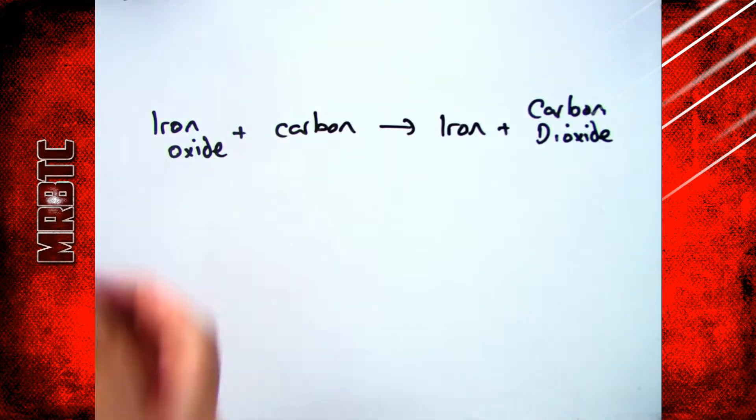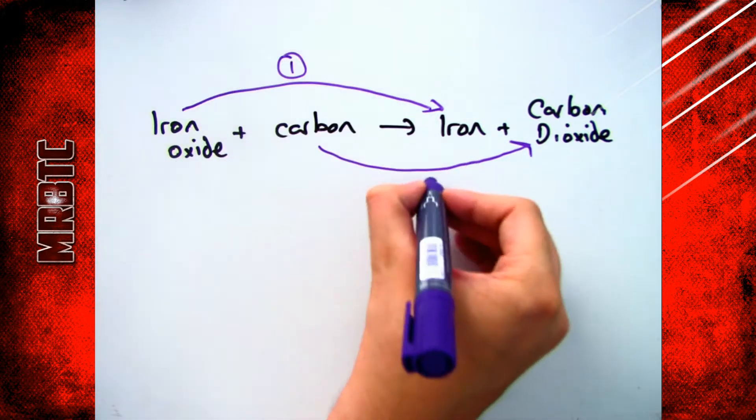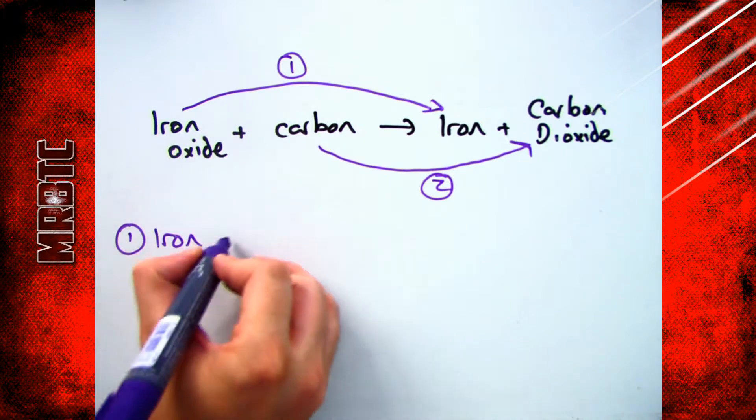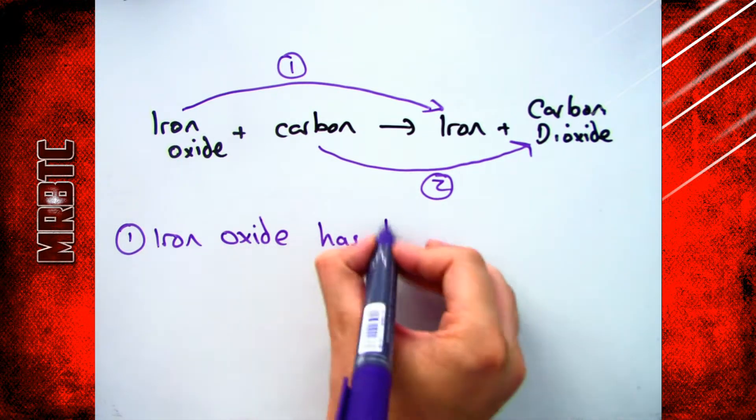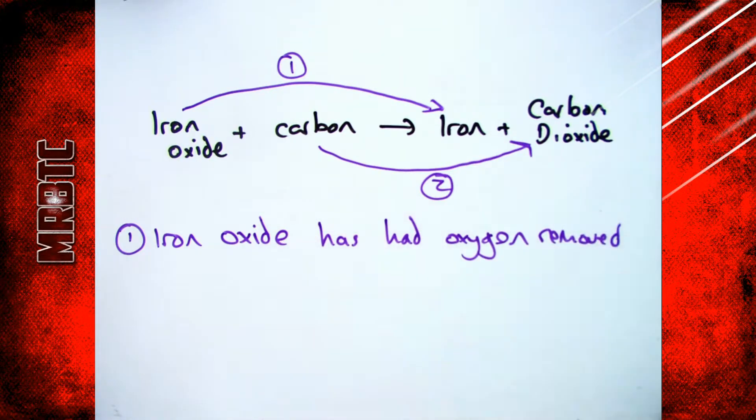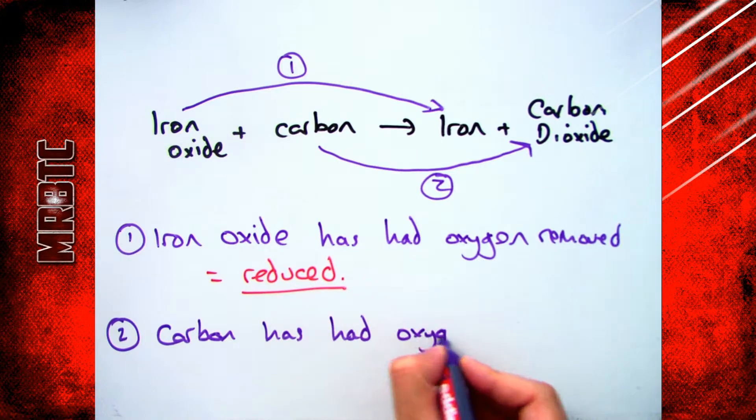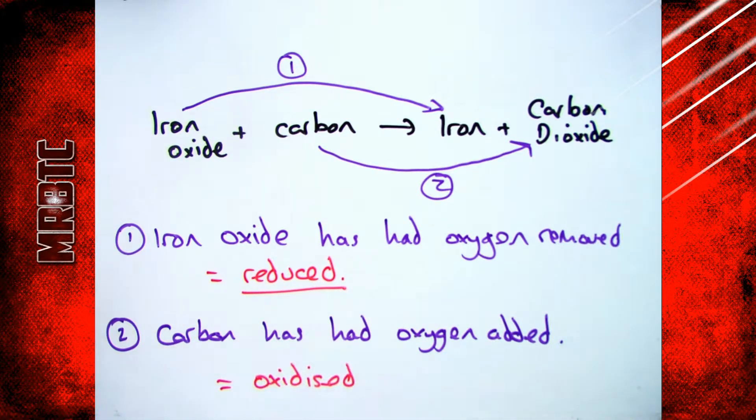Oxidation and reduction can both occur in the same reaction. So for example, if I reacted iron oxide with carbon, heated it with carbon, it forms iron and carbon dioxide. So what you can see from this is the iron oxide has had oxygen removed, therefore we say iron oxide has been reduced, and the carbon, I've gone from carbon to carbon dioxide, so it's had oxygen added, therefore that has been oxidized.